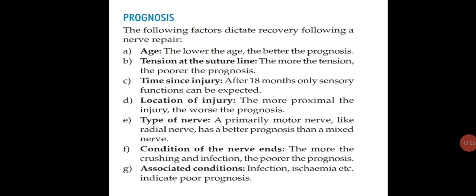Prognosis: the following factors dictate recovery following nerve repair. Age — the lower the age, the better the prognosis. Tension at the suture line — the more the tension, the poorer the prognosis. Time since injury — after 18 months, only sensory functions can be expected. Location of injury — the more proximal the injury, the worse the prognosis. Type of nerve — a primarily motor nerve like the radial nerve has a better prognosis than a mixed nerve. Condition of nerve ends — the more the crushing and infection, the poorer the prognosis. Associated conditions like infection and ischemia also indicate poor prognosis.